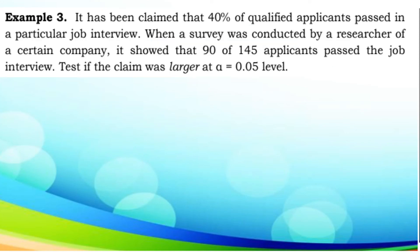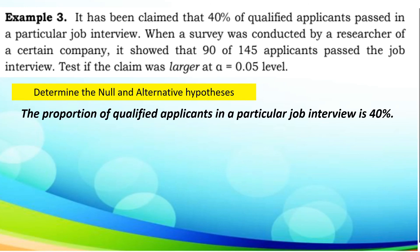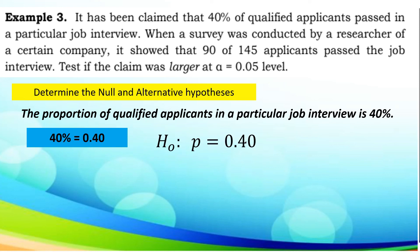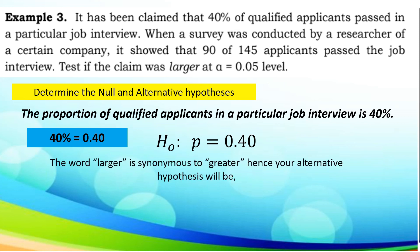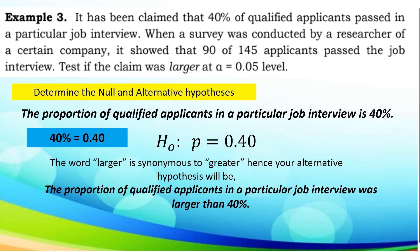Another example. It has been claimed that 40% of qualified applicants passed in a particular job interview. When a survey was conducted by a researcher of a certain company, it showed that 90 of 145 applicants passed that job interview. Test if the claim was larger at a given level of significance of 0.05. The proportion of qualified applicants in a particular job interview is 40%, which converts to 0.40. The null hypothesis is P equals 0.40. The word 'larger' is synonymous to 'greater.' Hence, the alternative hypothesis is: the proportion of qualified applicants was larger than 40%. In symbol, the alternative hypothesis is P is greater than 0.40.